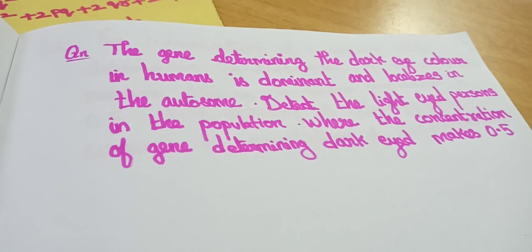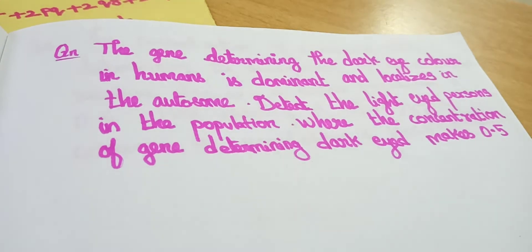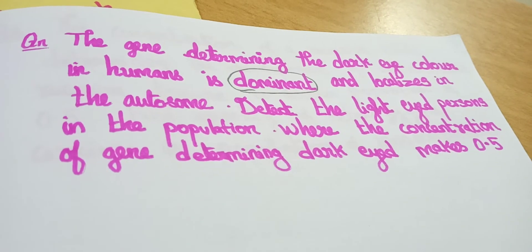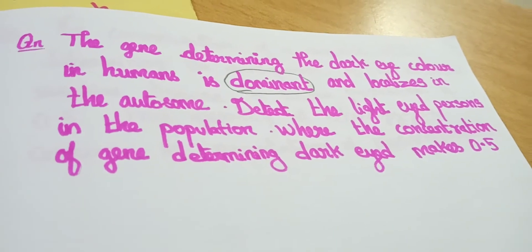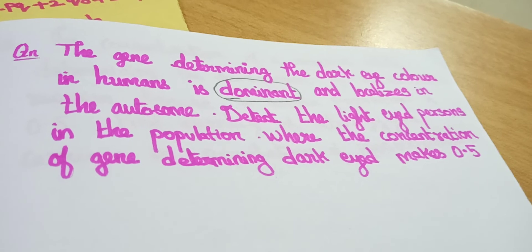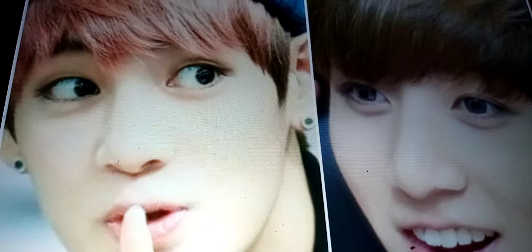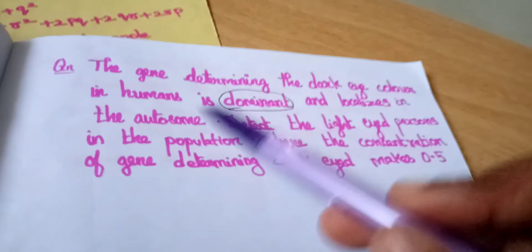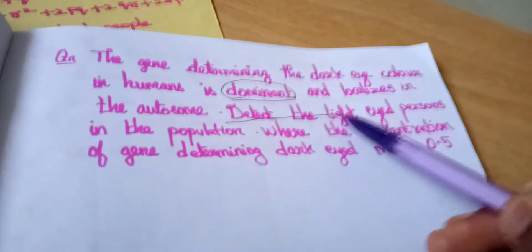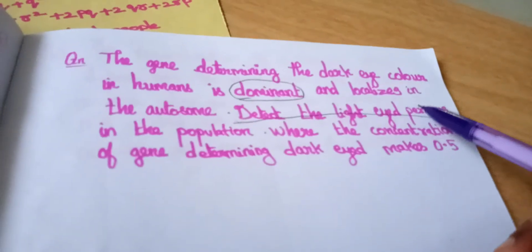Let's see this question. The gene determining dark eye color in humans is dominant and localizes in the autosome. Detect the light-eyed persons in the population where the concentration of gene determining dark eye color is 0.5. Dark eye color is dominant and light-eyed is recessive. Here they are asking detect the light-eyed persons. Here comes our trick. They are asking about persons.